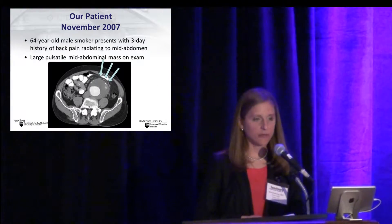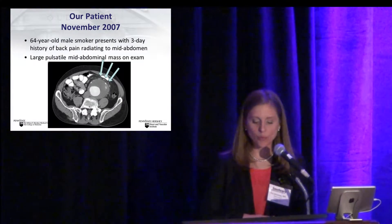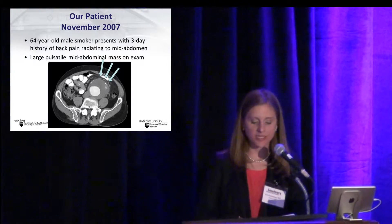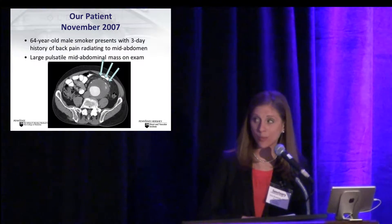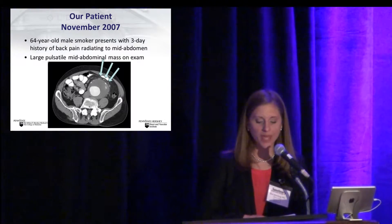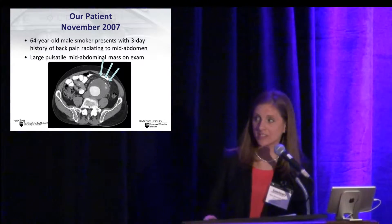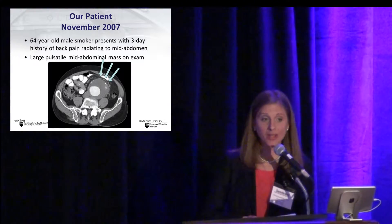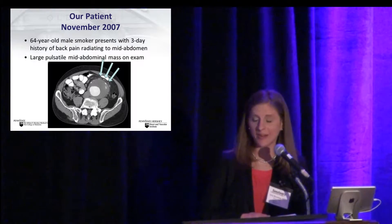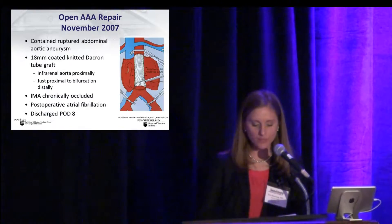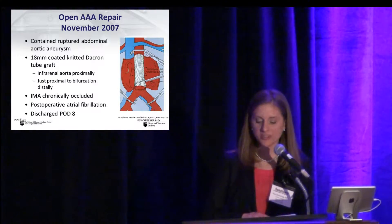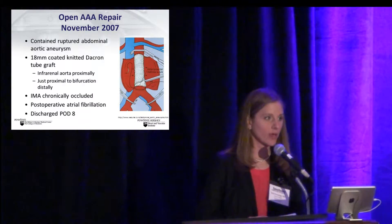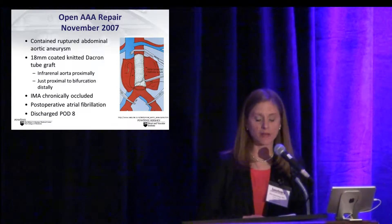We first met this 64-year-old patient in 2007 when he presented with abdominal pain and a large, tender pulsatile abdominal mass. A representative CT scan image shows findings of an 8.4-centimeter abdominal aortic aneurysm and evidence of rupture with stranding of the periaortic tissue. At exploration, the patient was found to have a contained rupture and underwent repair with an 18-millimeter Dacron tube graft.